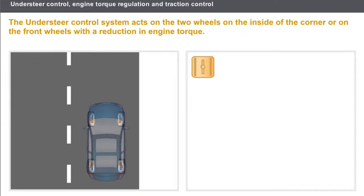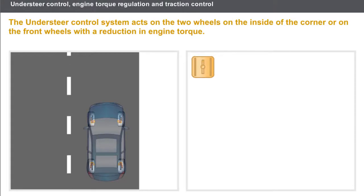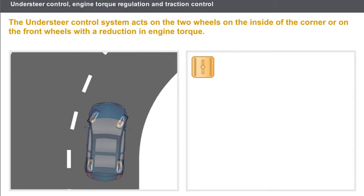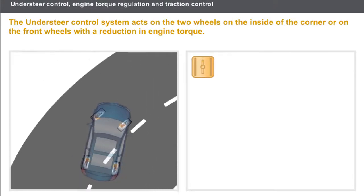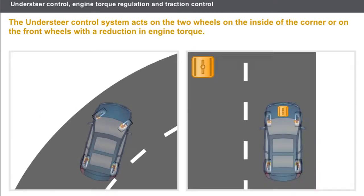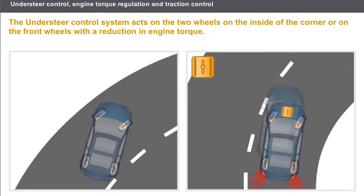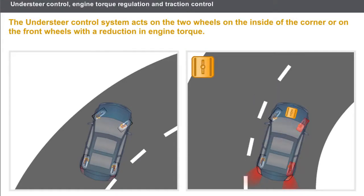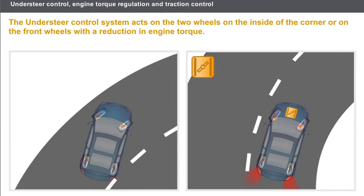Understeer control is an additional function of the electronic stability program. This function intervenes during loss of control of the vehicle during understeer. The correction acts on the two wheels on the inside of the corner, or on the front wheels with a reduction in the engine torque.